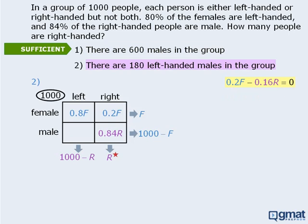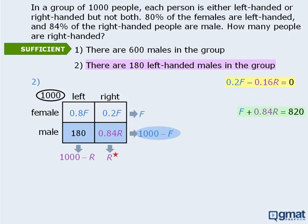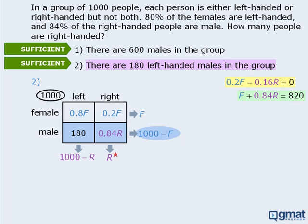Statement 2 tells us that there are 180 left-handed males in the group. Since the sum of the left-handed male and right-handed male boxes must equal 1,000 minus f, we can write another equation. Rewriting this in the same form as the first equation, we can see that we have another system of equations that we could solve for r. As such, statement 2 is also sufficient, and the answer is D.